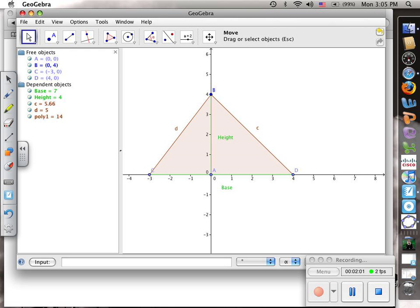Now I have my two measurements and what the computer is telling me the area is. Let's check to see if the formula one-half base times height is correct for this.